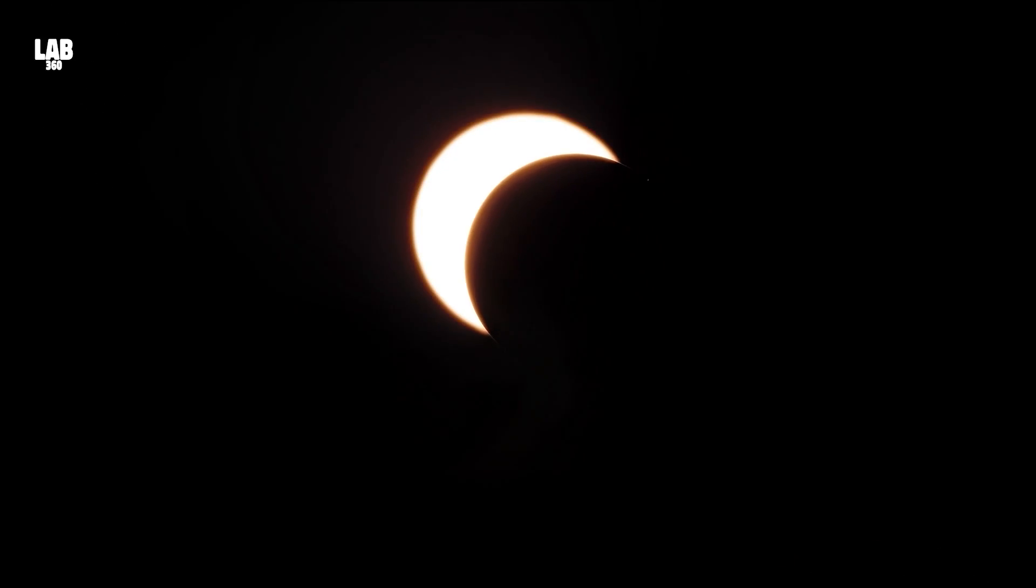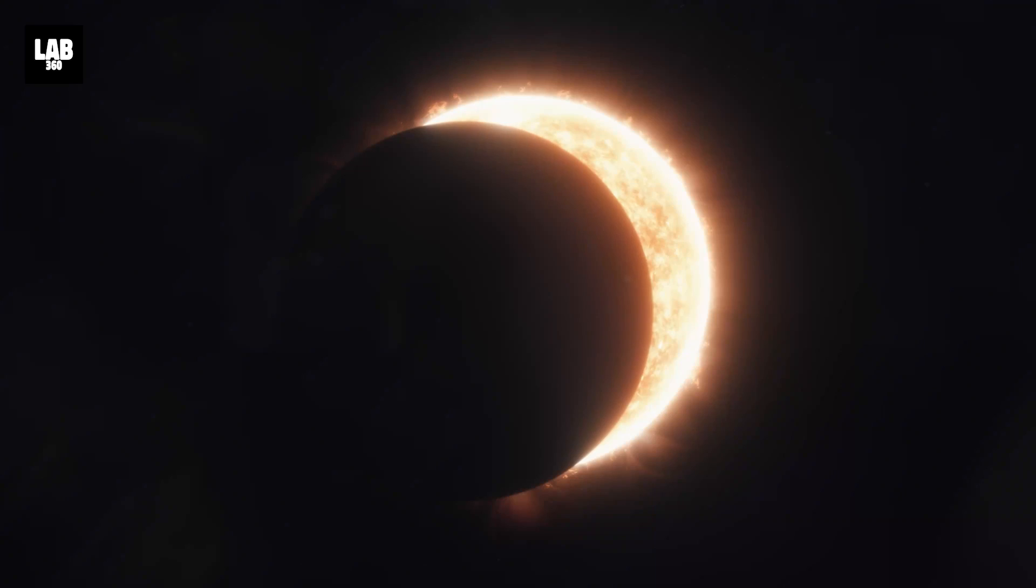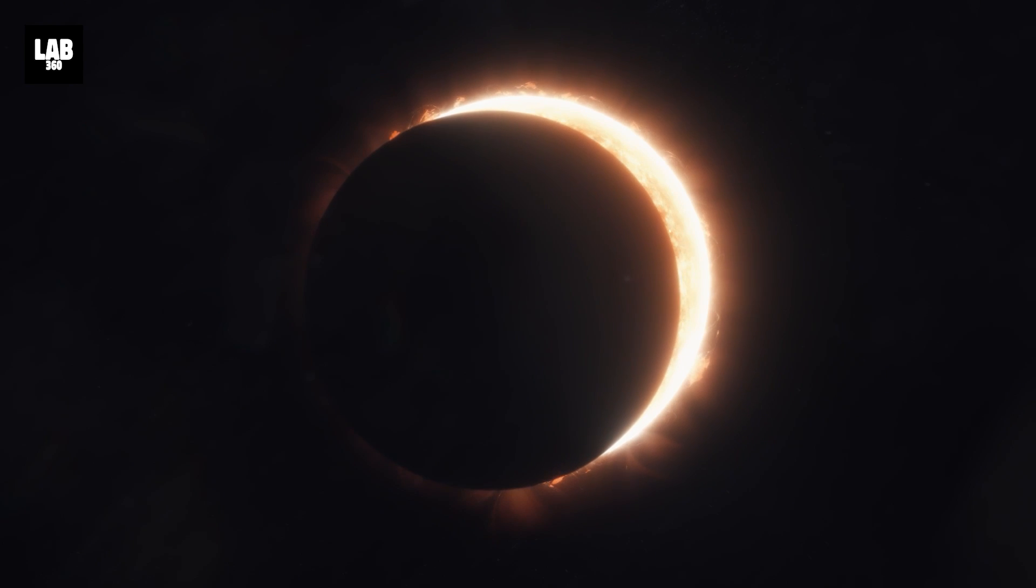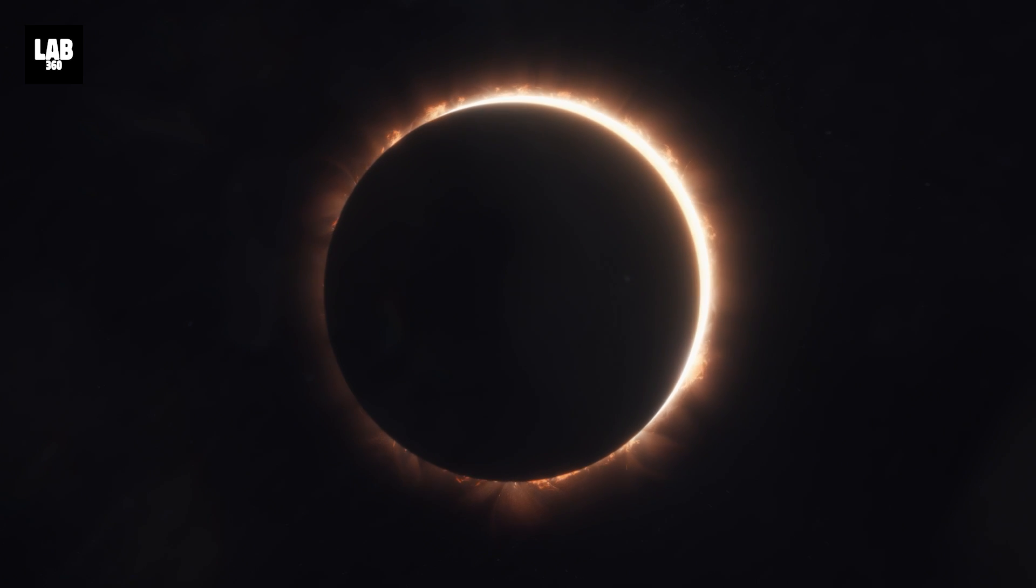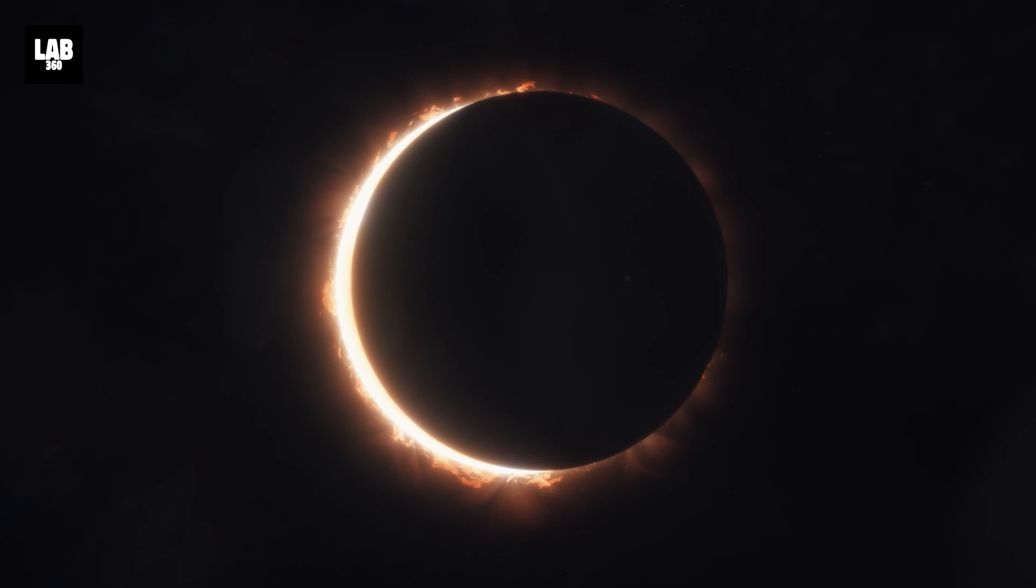Total solar eclipses last anywhere from 10 seconds to about a few minutes. The longest total solar eclipse in the history of mankind will occur on July 16, 2186. It will last for a total span of 7 minutes 29 seconds.